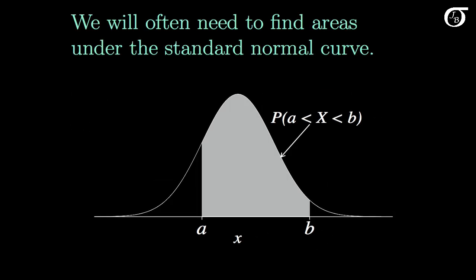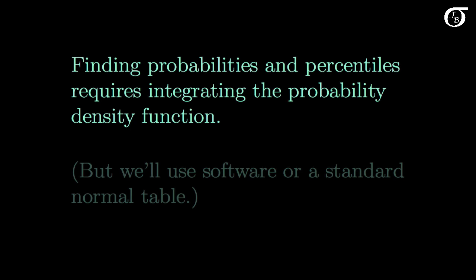As we will soon see, we very often need to find areas under the standard normal curve. Probabilities are simply areas under the curve, and very often the question of interest involves finding a probability. Finding probabilities and percentiles for the normal distribution requires integrating the probability density function. There isn't a closed form solution, and it must be integrated numerically. Fortunately for us, we're going to use software or a standard normal table to actually find these values in practice.